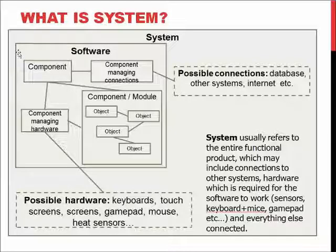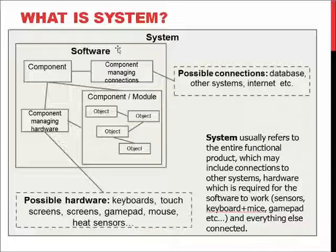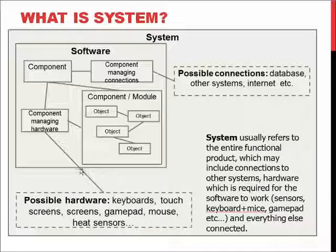The system is an extension of the software, including all the possible connections — like a data connection to the internet, connection to a database, access to data servers — and also the possible hardware needed to use the system: keyboard, touch screen, view screens, game pads, mouse, heat sensors, whatever hardware you need to be able to use the software or for the software to perform its function. For example, a fire alarm system which cannot identify or sense heat, smoke, or carbon dioxide is a pretty crappy system. So, hardware plus all the needed connections and access to places plus software is the system.